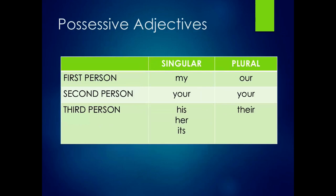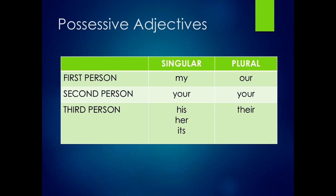Possessive adjectives. For first person singular, we say my. For first person plural, we say our. For second person singular and plural, we use the possessive adjective your. For third person singular, we use his, her, or its. For third person plural, we use their.